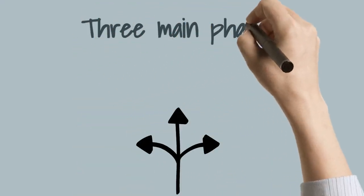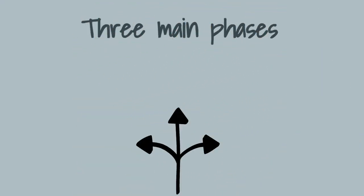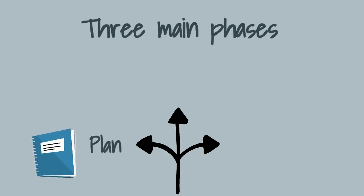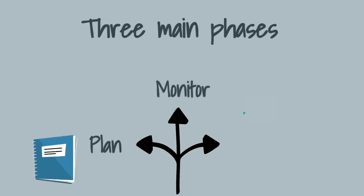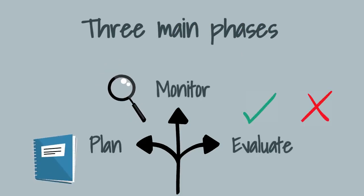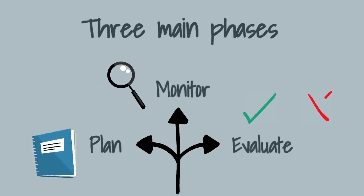As Jen started to conduct her research, she learned that Adam was right — that there were three phases to metacognition: the planning phase, the monitoring phase, and the evaluation phase.